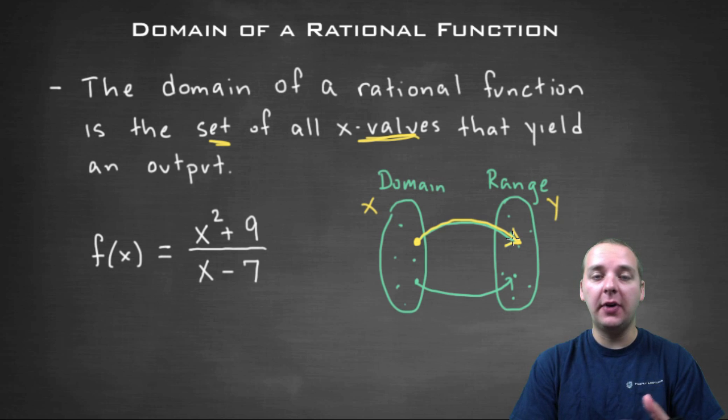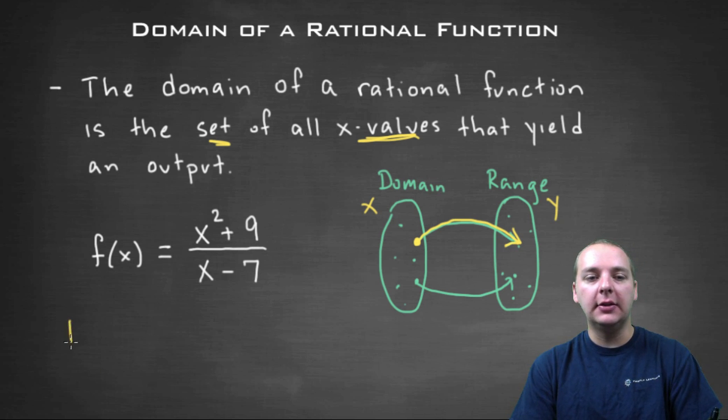So most x values are fine. You can plug in most x values. The thing you have to watch out for with rational functions is that the x value that you plug in can't give you division by zero.